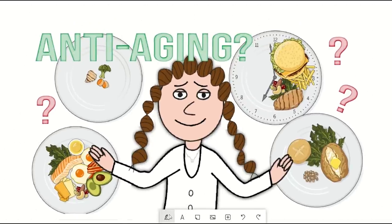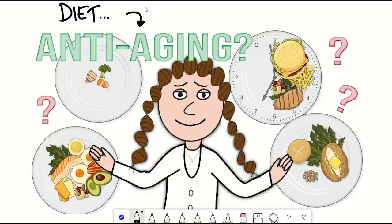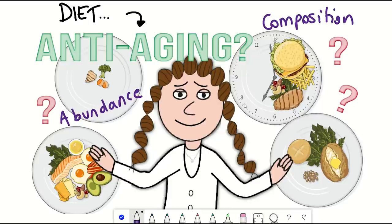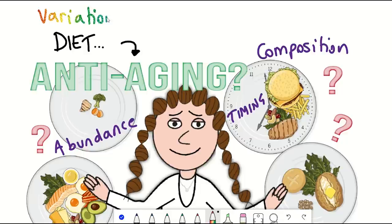When it comes to diet, things can get complicated, especially in the context of whether a diet may have anti-aging potential. Diet includes not only composition, but abundance and timing. And if you think about it, even a specific diet can have much variation in each of these different variables, depending on your lifestyle and where the food you eat was sourced.